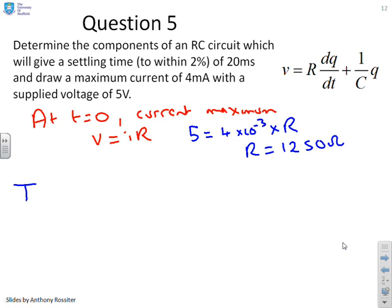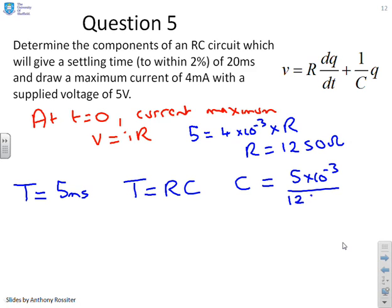Next, we're told we want the time constant to be 5 milliseconds. You'll see that you're told settling to within 2% of 20 milliseconds and to within 2% is 4 time constants. So 20 milliseconds being 4 time constants means 1 time constant is 5 milliseconds. Now, from the equation we've got, we can also see that T equals RC. So what that tells me is that C equals 5 times 10 to the minus 3 divided by 1250, which gives me 4 times 10 to the minus 6 farads. And there's your answer.